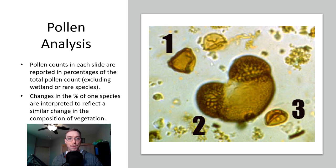So pollen counts in each slide are reported in percentage of the total pollen count excluding wetland or rare species. Changes in the percentage of one species are interpreted to reflect a similar change in the composition of vegetation. So if you've got a basically continuous tray of coniferous plants and then you see pollen from hardwood or deciduous plants coming, well that can infer a lot on what temperatures are like at the time of deposition. If you have more deciduous coming in you might have warmer climates starting to invade into this region for a prolonged period of time allowing the deciduous trees to beat out the coniferous trees.